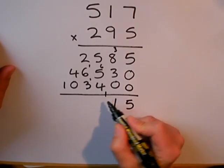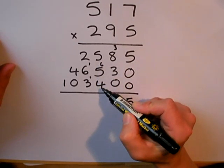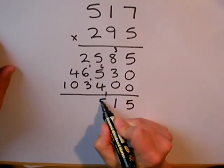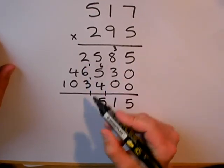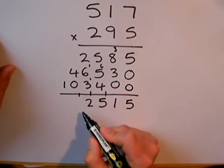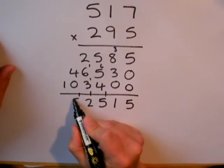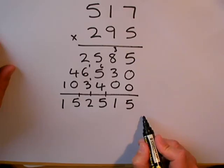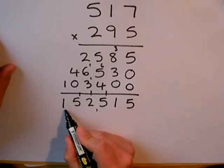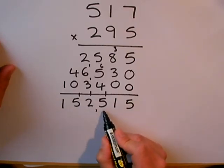8 and 3 is 11. 5 and 5 is 10. And 4 and 1 is 15. 6, 3 and 1 make 10. So, 2 more is 12. And 4 and the one to carry is 5. Finally, 1 on its own there gives me my final answer. My final answer is 152,515.